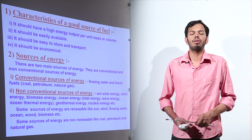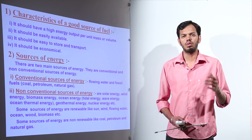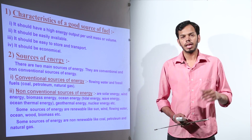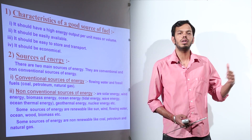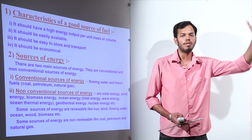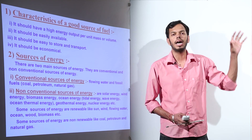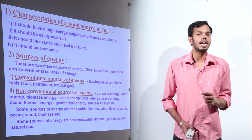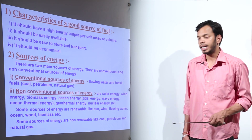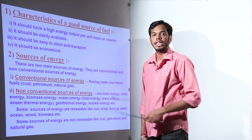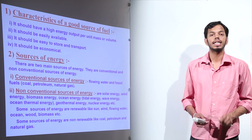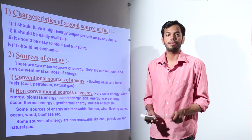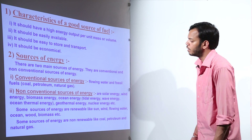For example, if we build machinery to harness the energy of wind — that means we are talking about a windmill — we convert wind energy into electricity. Every time wind blows, we are going to get energy, so this source of energy can be harnessed again and again. But non-renewable sources of energy are those which, once depleted, we do not have any method to replenish — they are completely out of stock.